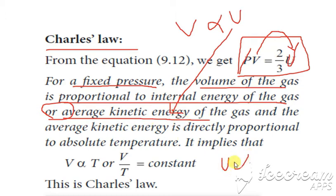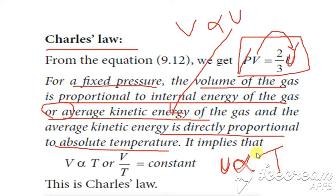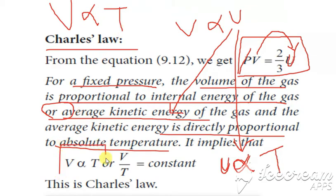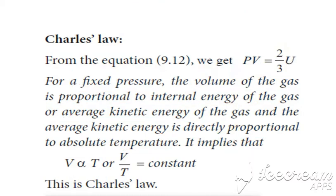For internal energy, we can also say it is the average kinetic energy. Average kinetic energy, that is internal energy, is also directly proportional to the absolute temperature. So V ∝ U, and U ∝ T, so we can write V ∝ T. For fixed pressure, the volume of the gas is proportional to the energy and that energy is proportional to the temperature, so V/T = constant. This gives Charles' law.